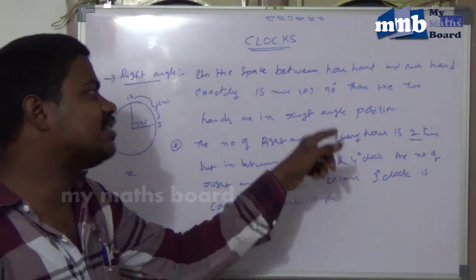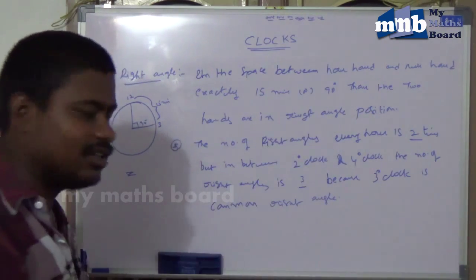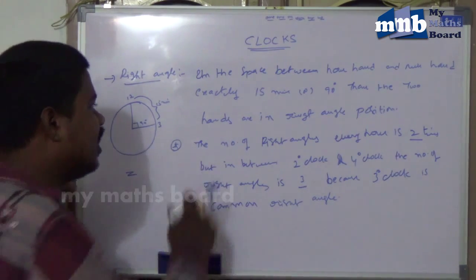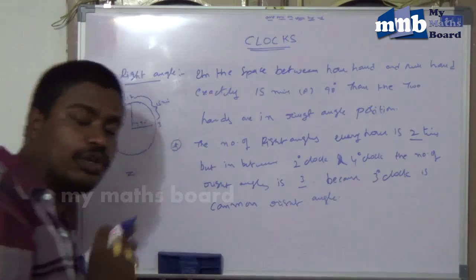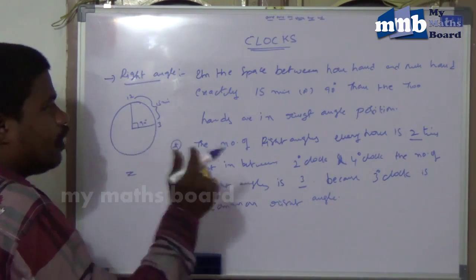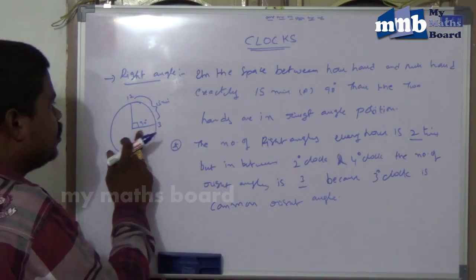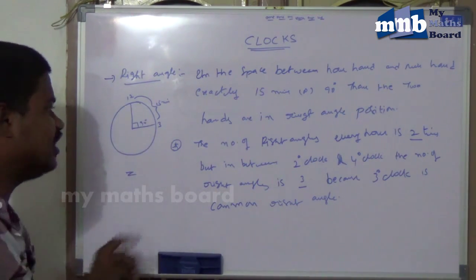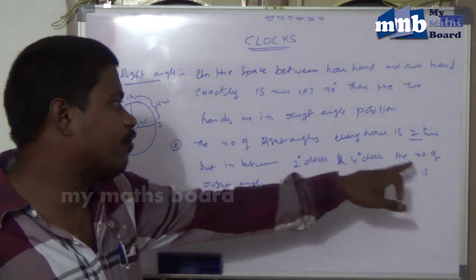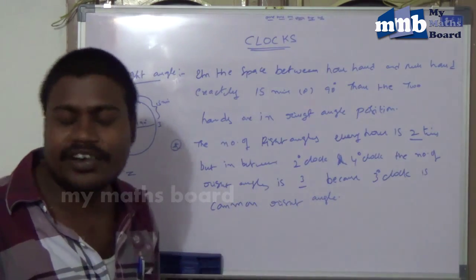The number of right angles per every hour is two times — this is a very important point. So in every one hour you will see two right angles. For example, in between 2 o'clock and 3 o'clock there are two right angles, but in between 2 o'clock and 4 o'clock the number of right angles is 3, because 3 o'clock is the common right angle.